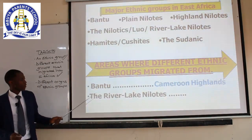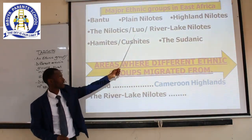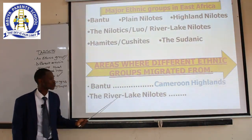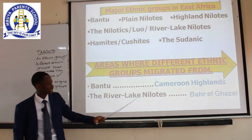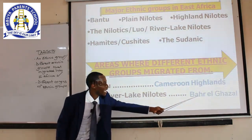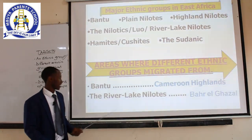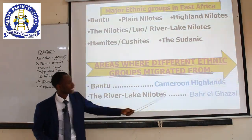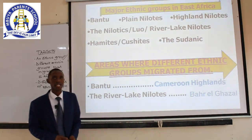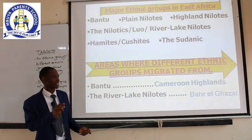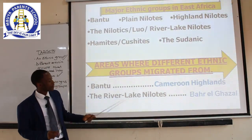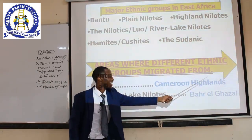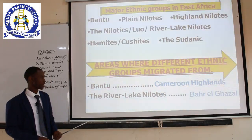Ethnic group two: we have the River Lake Nilotics — we call them the Luo speakers. Where did these people migrate from? The River Lake Nilotics migrated from an area called Bahr el Ghazal. Different books may spell it differently, but the original homeland of the River Lake Nilotics is Bahr el Ghazal.